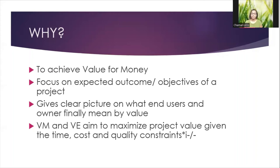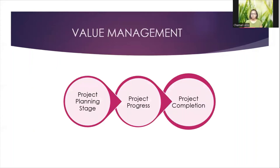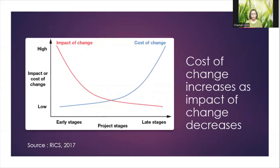Those three are the constraints in the triangle. Value management is not applied only at a single stage — you can apply it in the planning stage, during progress of the project, or at completion. However, we should know that the impact of change is significant if it is in the planning stage, because you don't incur additional physical costs. If the change is made at the initial planning stage, the design has not yet reached a physical level, so the cost impact may be less. At a later stage, the cost will be high, so it is advisable to apply value management at the very initial stage.